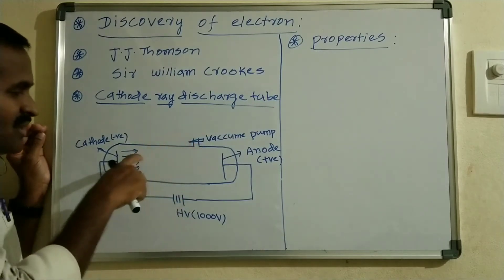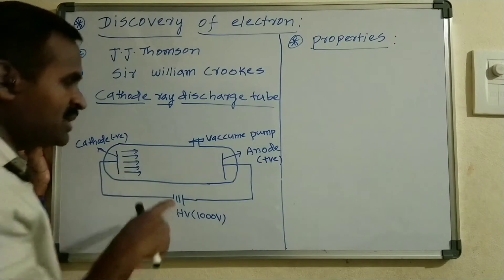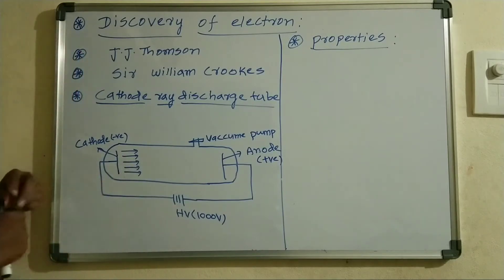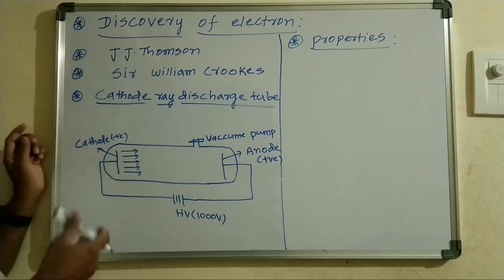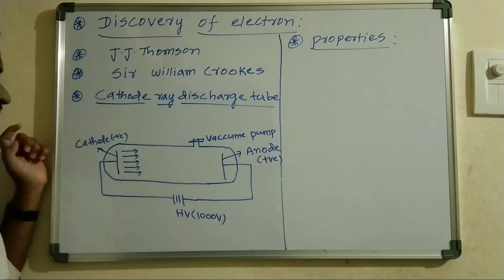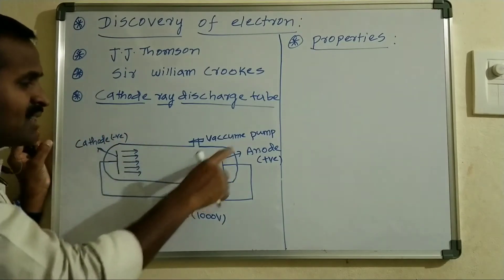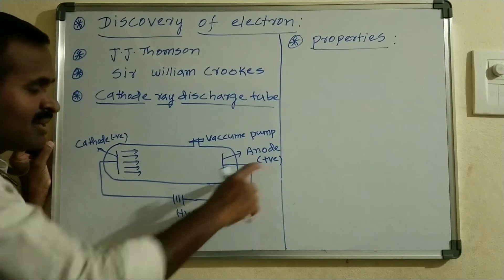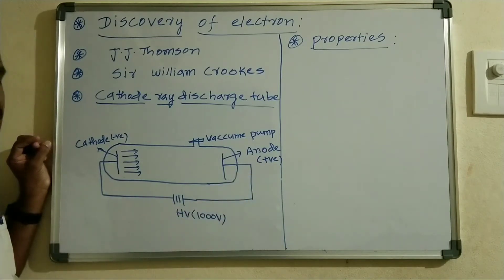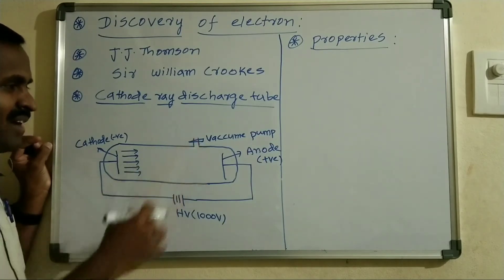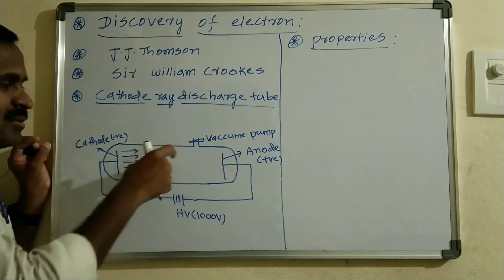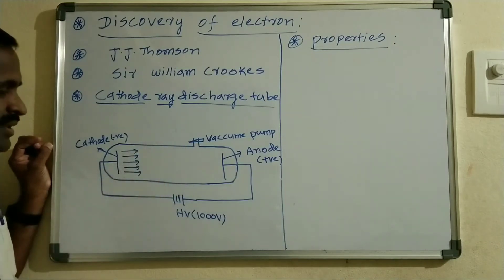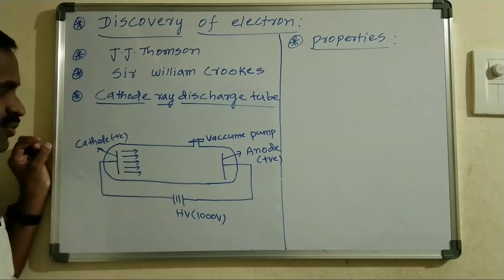In the discharge tube, there is a glass hollow tube containing two metal plates. One metal plate acts as a cathode, which is a negatively charged electrode, and another metal plate acts as an anode, which is a positively charged electrode. A vacuum pump is fitted to control the pressure inside, and both electrodes are connected to high voltage.